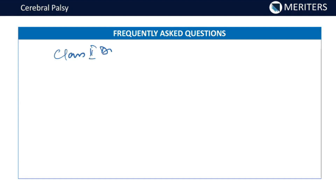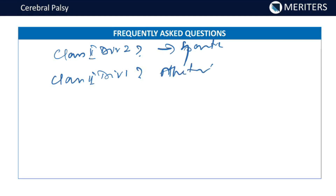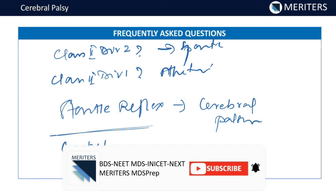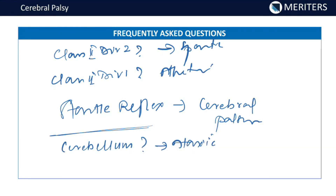Frequently asked questions: class 2 division 1 malocclusion is seen in the spastic type and the athetoid type. The startle reflex is seen typically in all varieties of cerebral palsy. The cerebellum is characteristically affected in the ataxic type of cerebral palsy. That summarizes cerebral palsy.